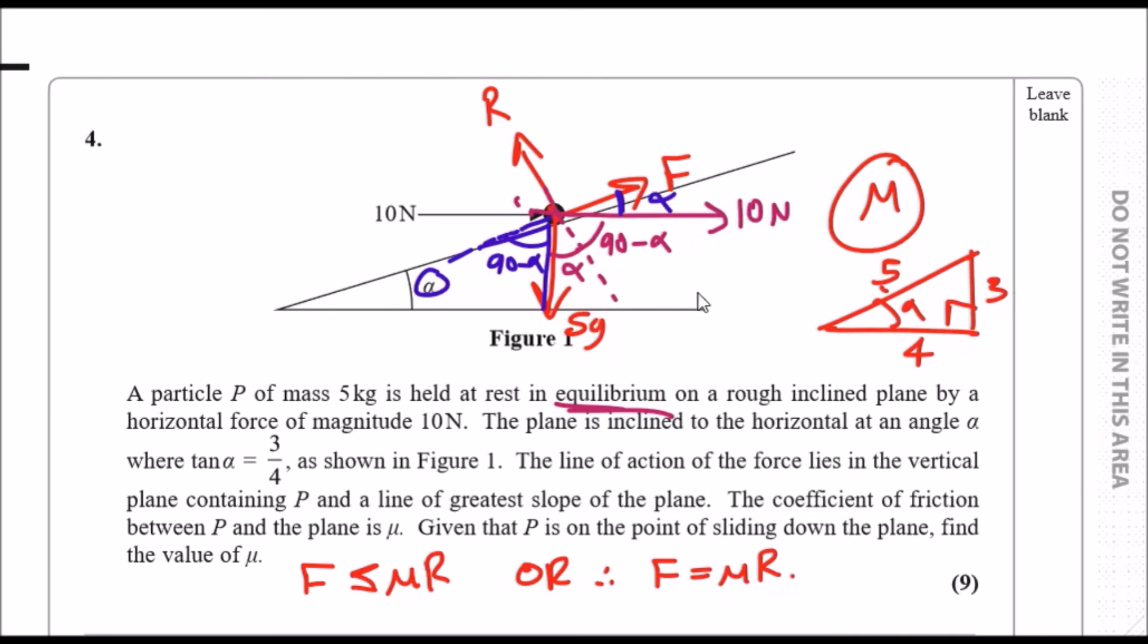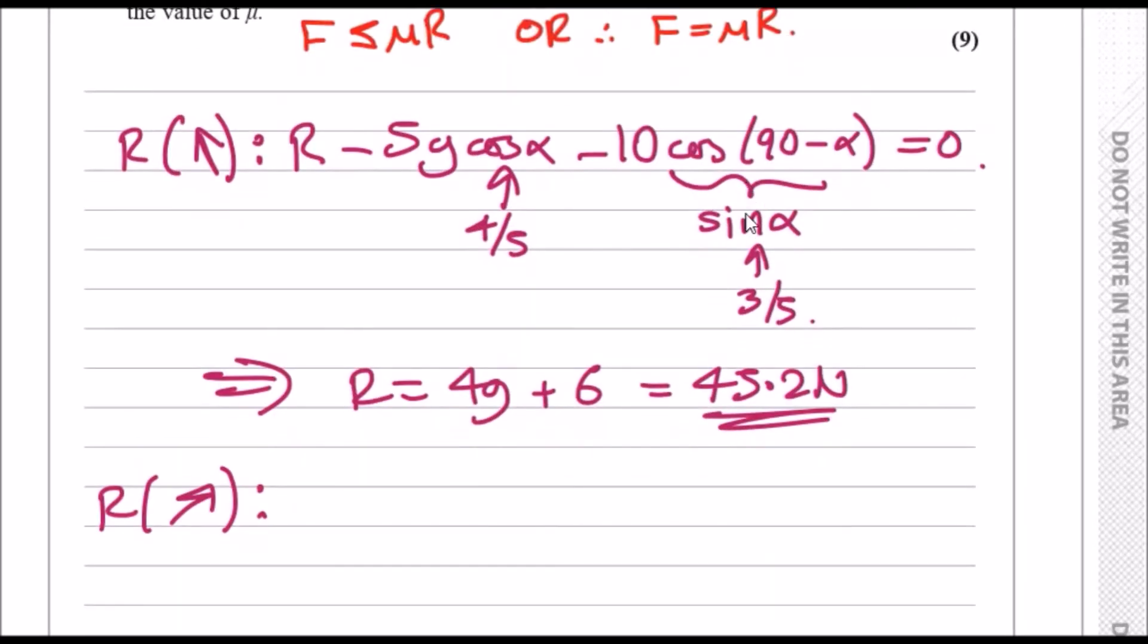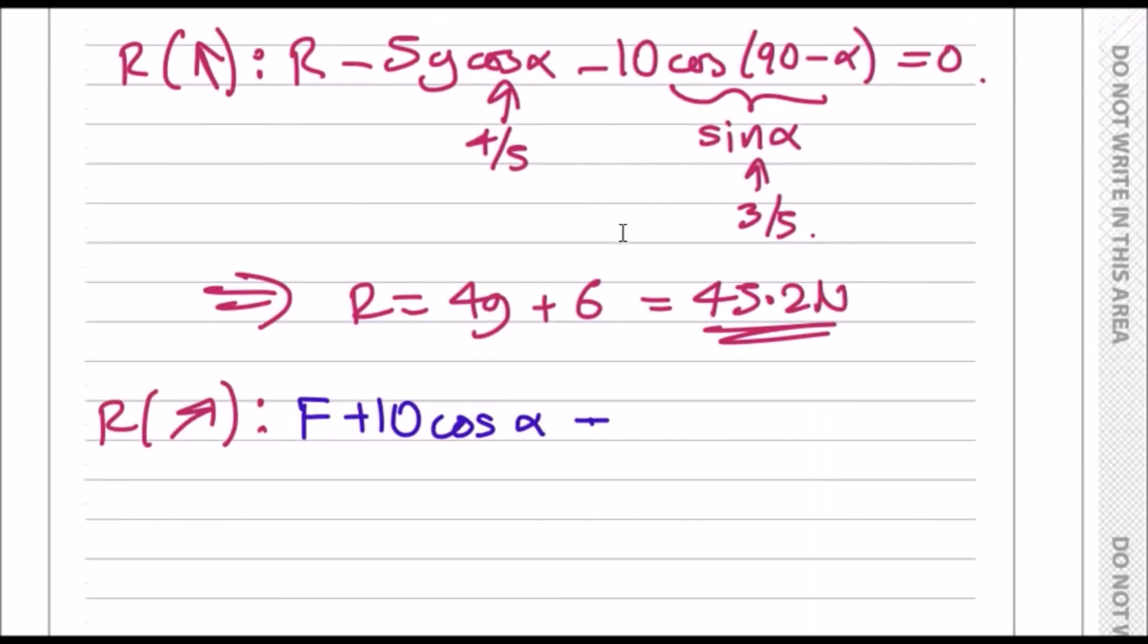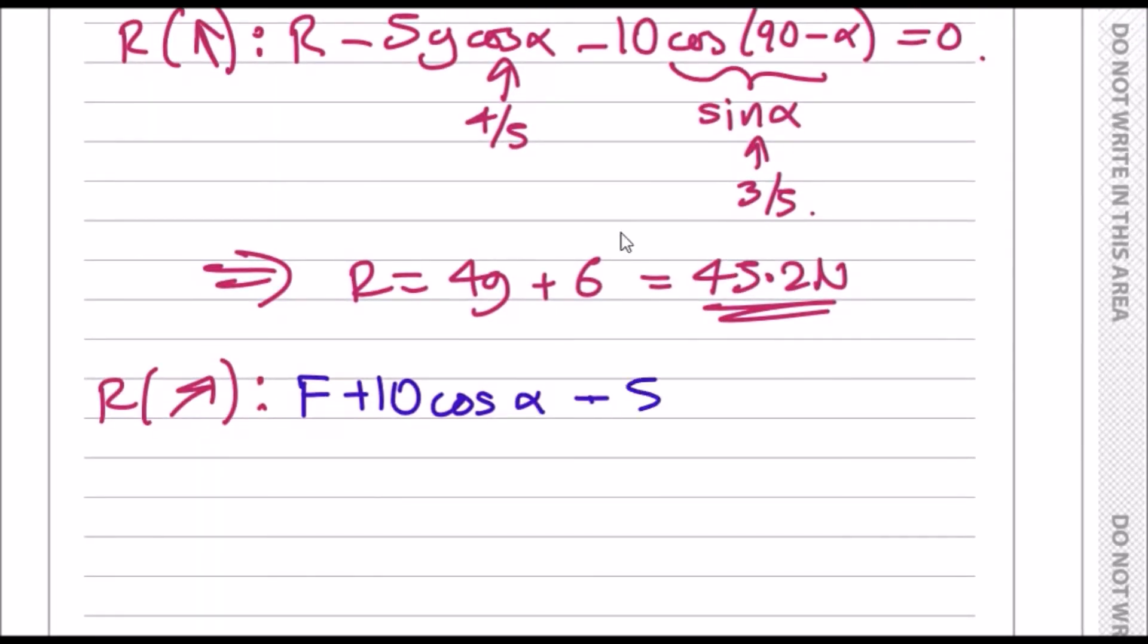R is perpendicular, so we don't include that. We've got F and 10, which are positive, and 5g, which is on the negative side. So F plus 10 cos α minus 5g cos(90 - α), and 90 minus α is just sin α, equals zero.